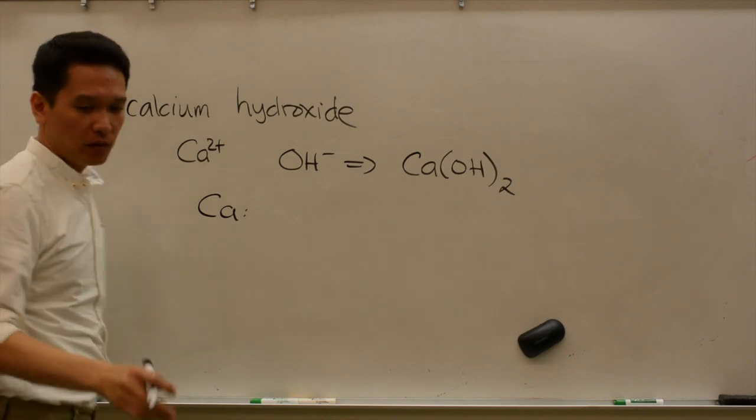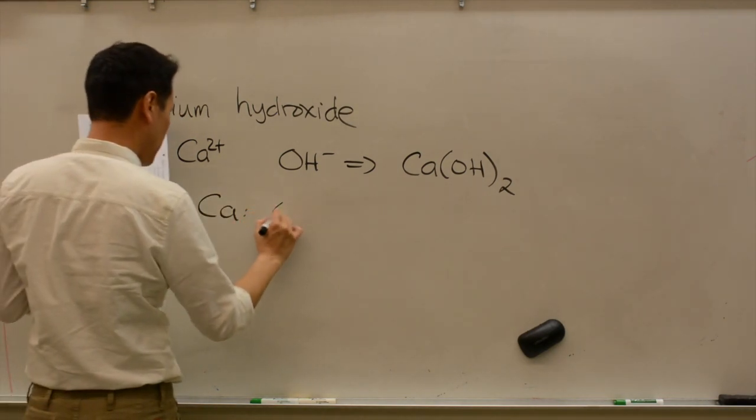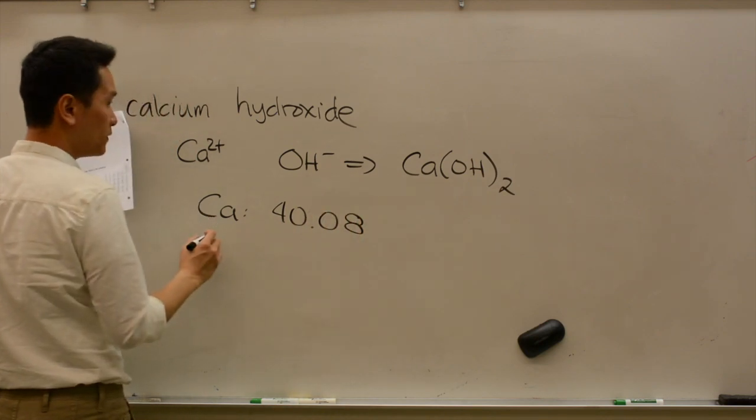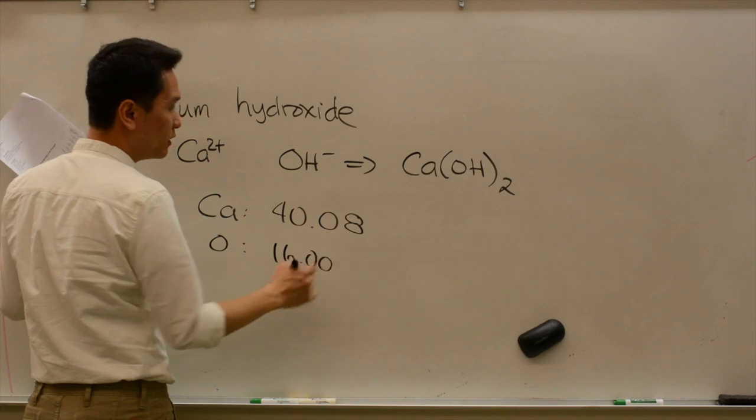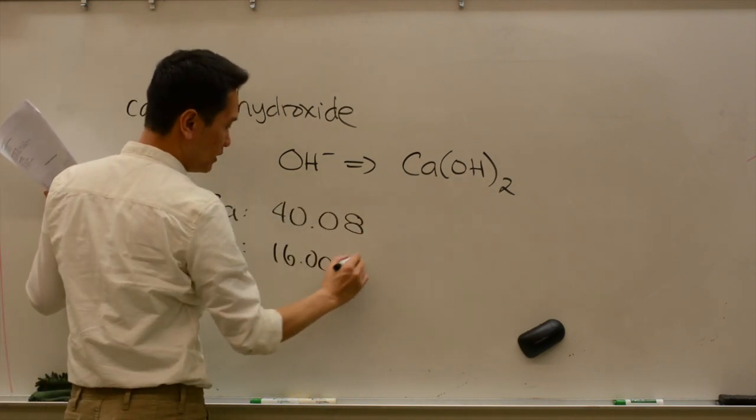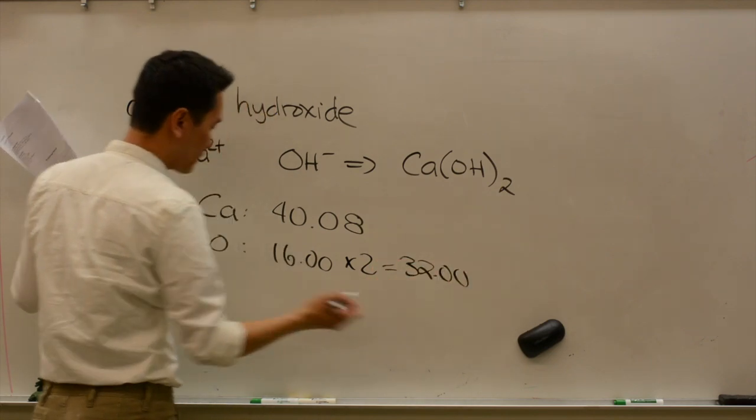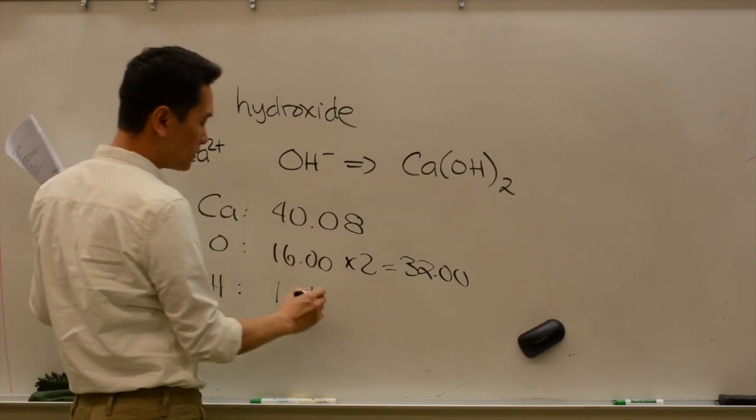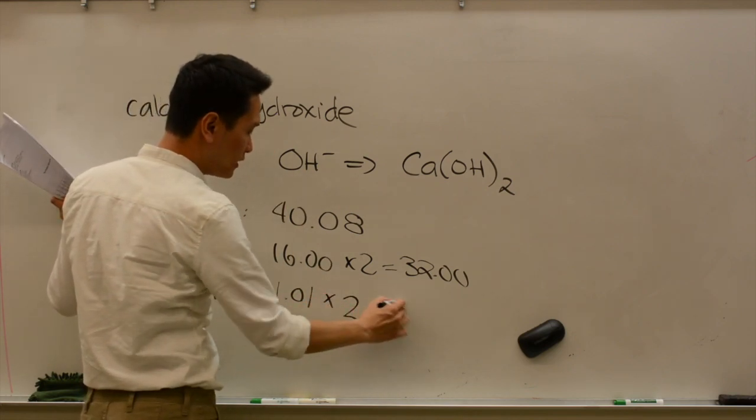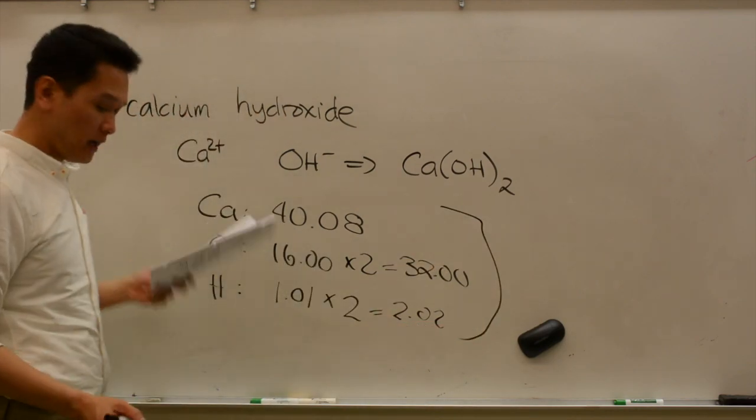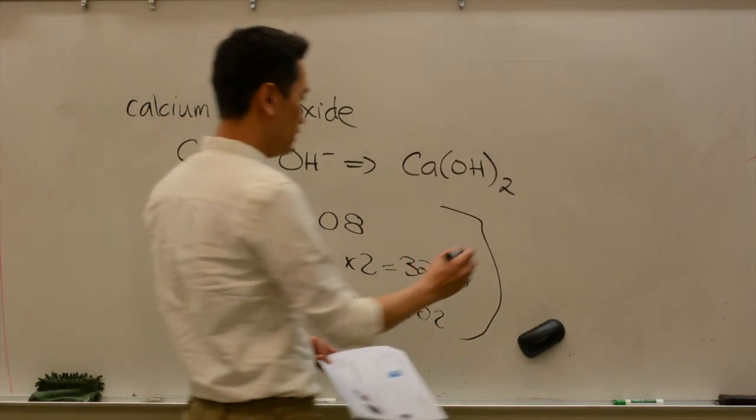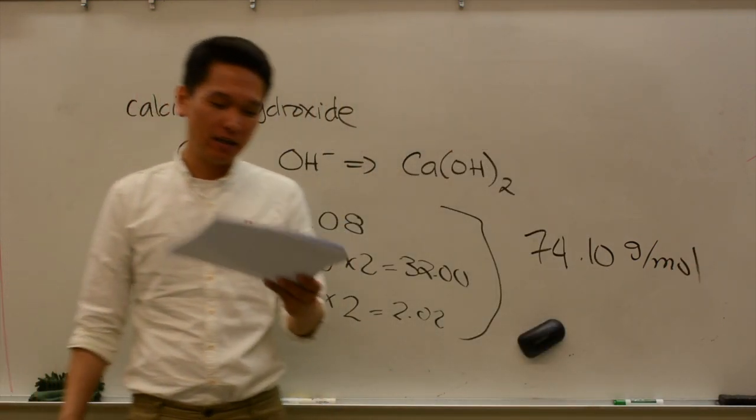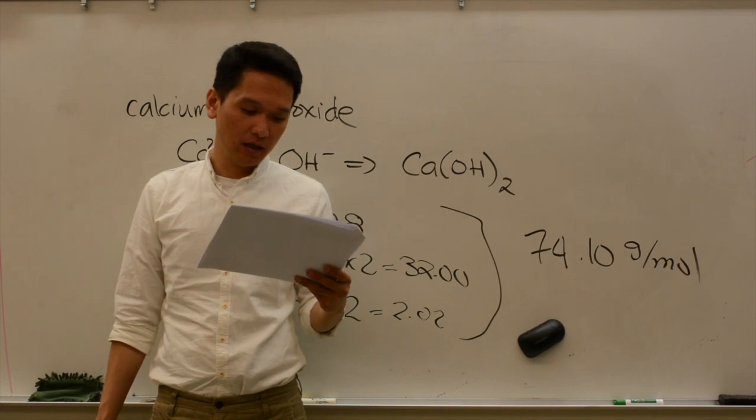So calcium, molar mass of calcium is 40.08. Oxygen is 16.00. But how many oxygens are there? Two, so that becomes 32. And hydrogen is 1.01. How many? Two, so that's 2.02. You add that up together and your answer should come out to be 74.10 grams per mole. So get more practice on these problems. You should be fine.